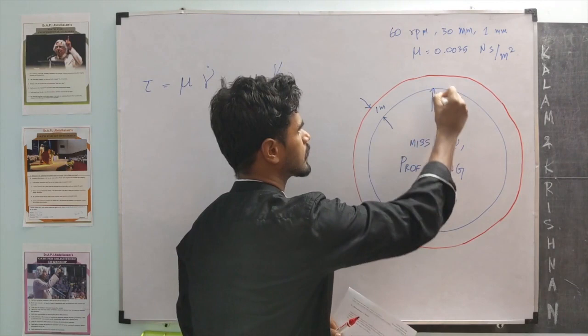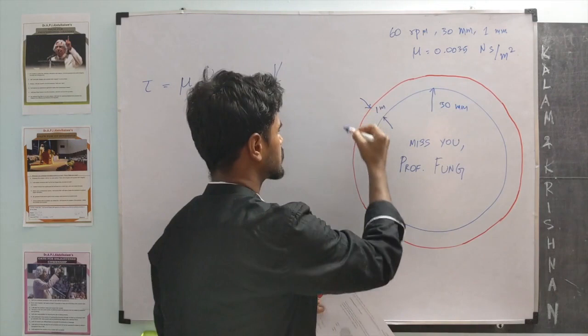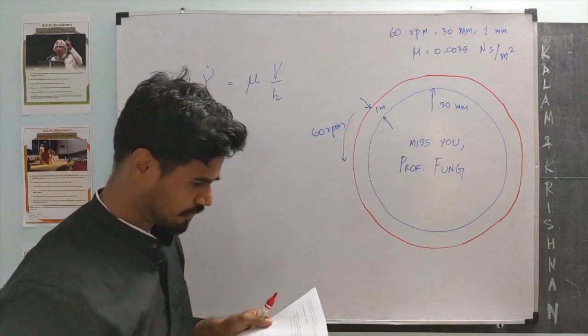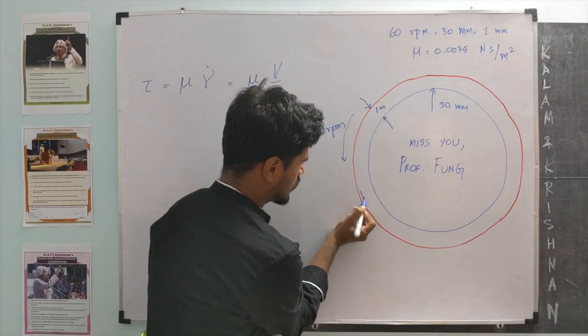The angular velocity of the outer cylinder is 60 revolutions per minute. And with that, the question is, what is the outer wall shear stress in this fluid? This is a very simple problem.